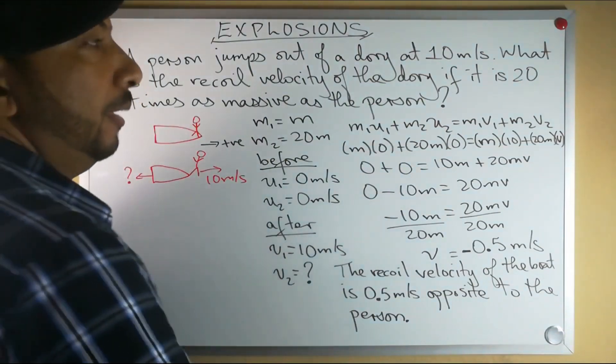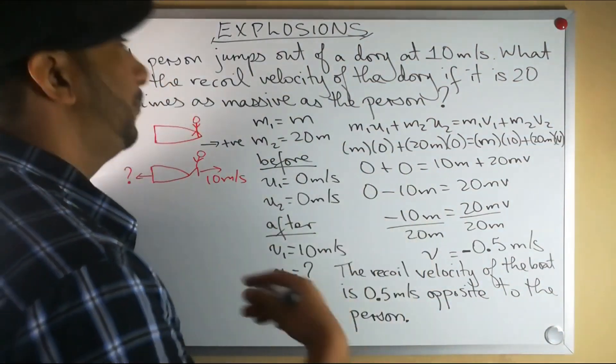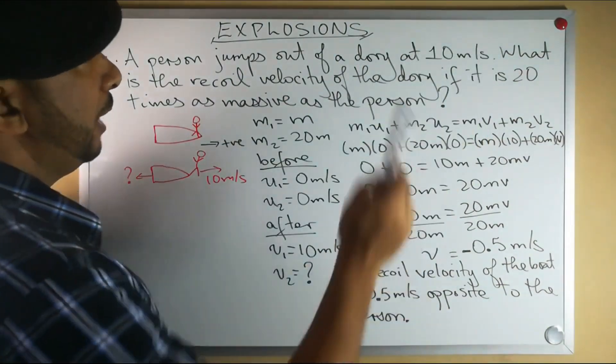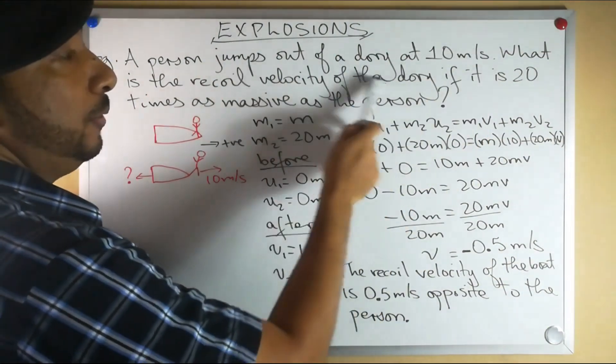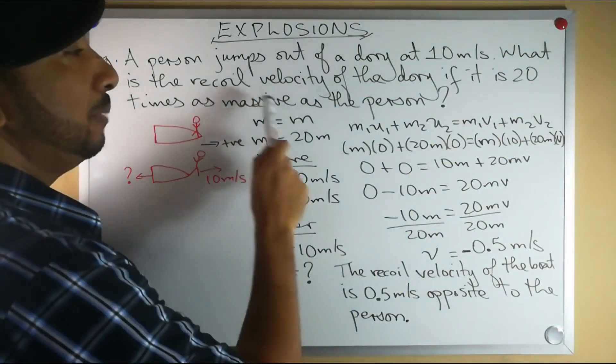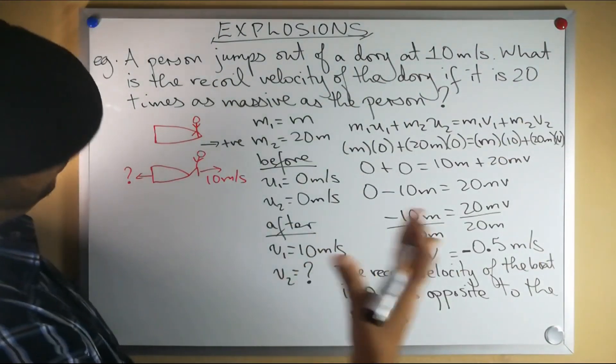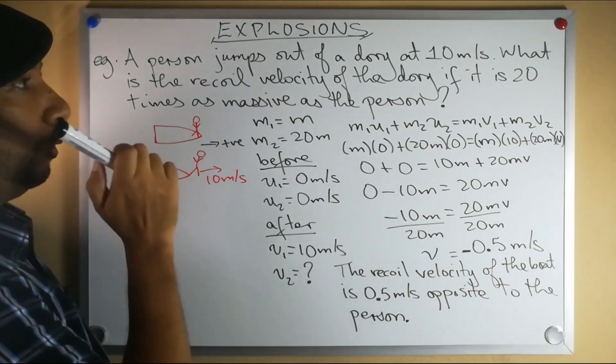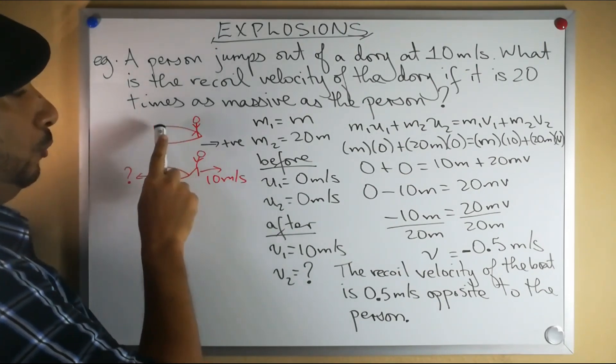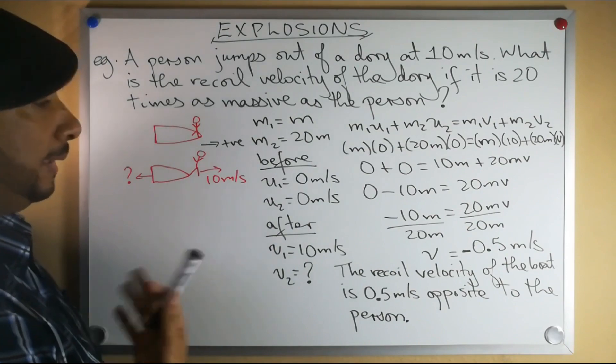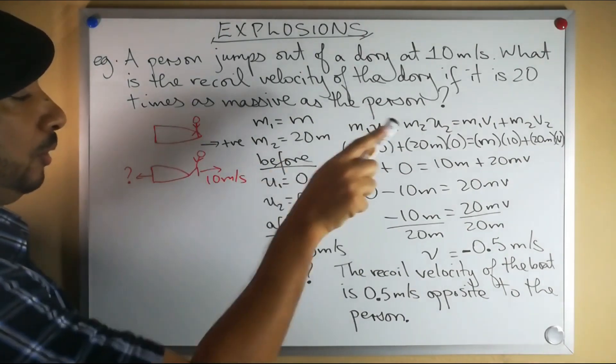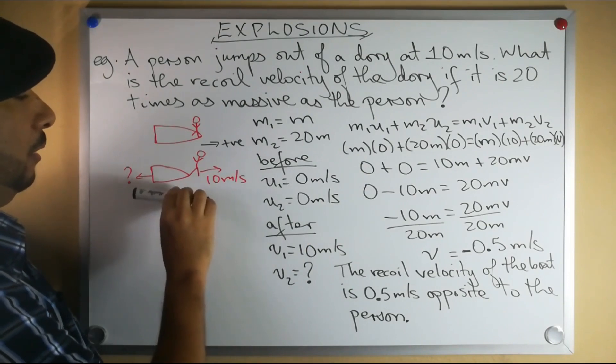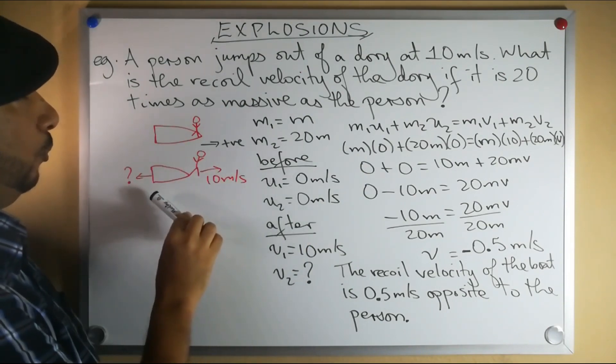Here we have: a person jumps out of a dory at 10 meters per second. What is the recoil velocity of the dory if it is 20 times as massive as the person? As usual, let's begin by drawing a diagram. So initially the dory and the person were together. Then what happens? The person jumps out of the dory at 10 meters per second.